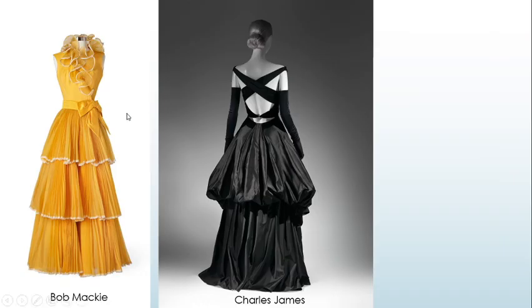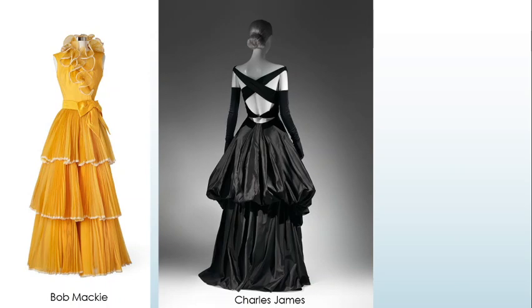Here we have simpler tiered examples: a dress by Bob Mackie where the tiers cut in and out in little stages, and a Charles James dress that's tiered but much more subdued, dropping down again in a simpler way. We don't always need to take things to absolute extremes — we can still play around depending on what we want.